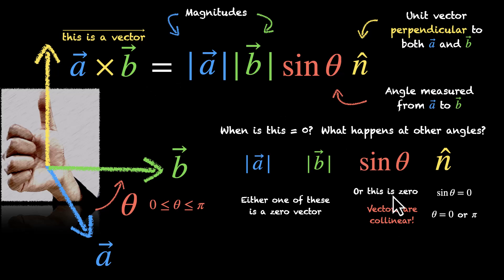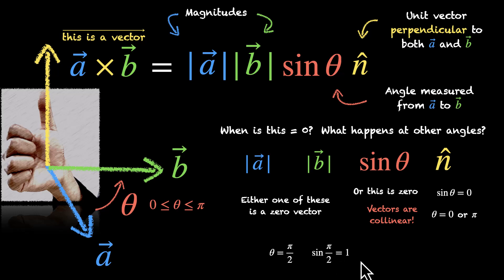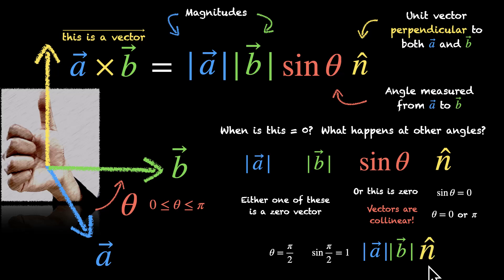What happens at other angles? When theta is pi/2, sine of pi/2 is 1. This means a cross b equals the magnitude of a times the magnitude of b times n-hat. n-hat is the unit vector perpendicular to both a and b.